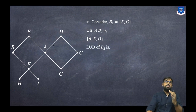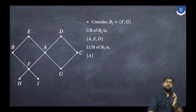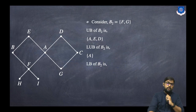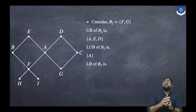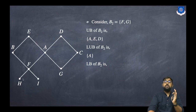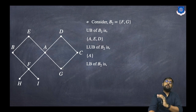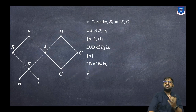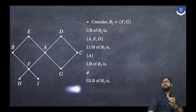Among the upper bounds a, e, and d, the least one is a, so the Least Upper Bound is a. Now for the lower bounds of {f, g}: for lower points there has to be a relation to the given set. The lower points are h and i. Can we go from h to f? Yes. Can we go from h to g? No. Similarly, we can go from i to f but not from i to g. So there is no lower bound — the lower bound is the empty set (∅). Since there are no lower bounds, the Greatest Lower Bound is also ∅.